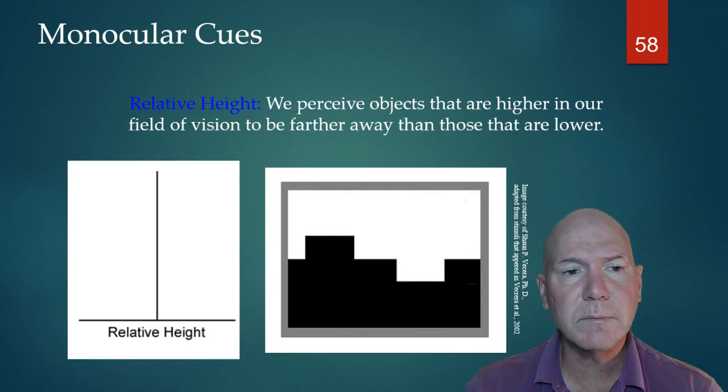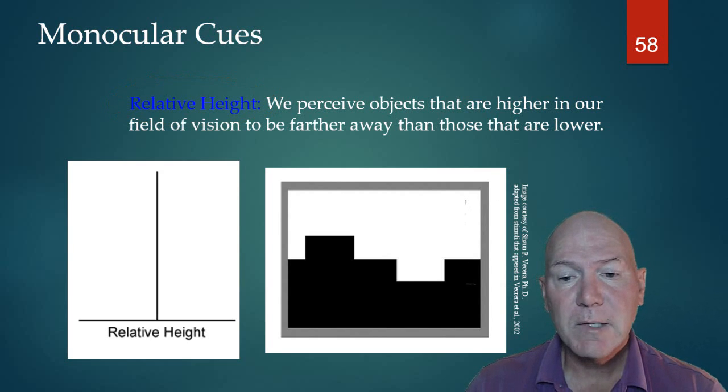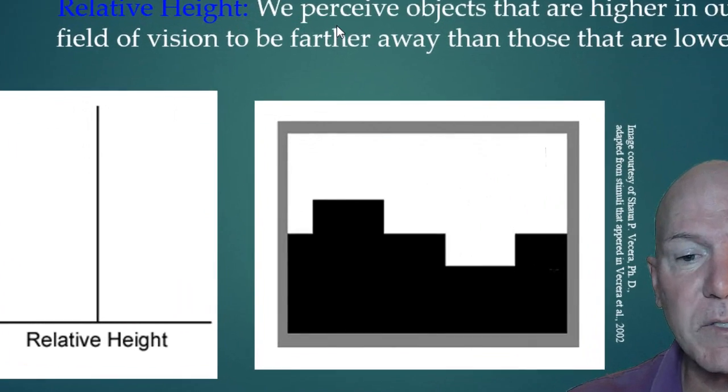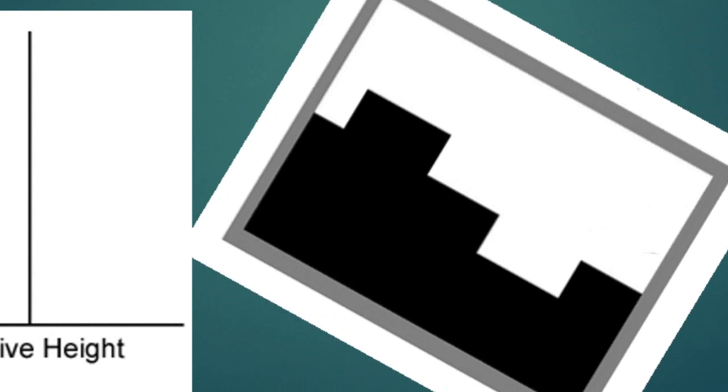Another cue is relative height. Relative height means we're used to seeing objects that are farther away being above objects that are closer. So our brain says things on top must be farther away. If we look at our diagram here, this looks like a black building with a white background or something like that, a block. It looks like it's in the foreground—this would be the figure, this would be the ground.